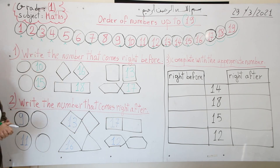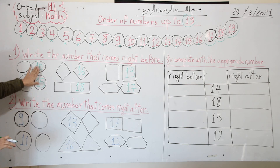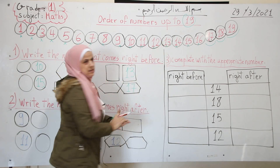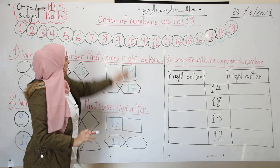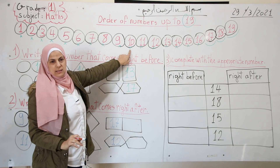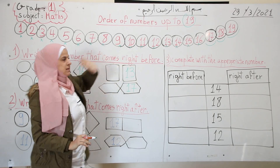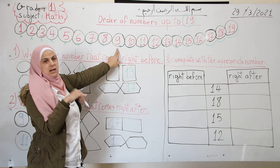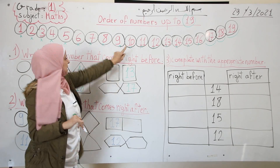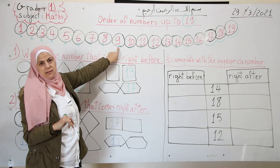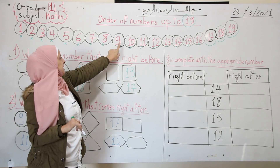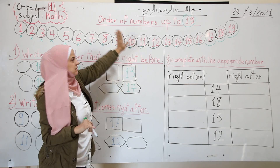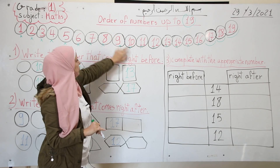Let's solve these exercises. Exercise 1: write the number that comes right before. I have number 10. I go back to the number line — this is number 10. I want to find which number comes right before 10. I have 9, so 9 is the number that comes right before 10.